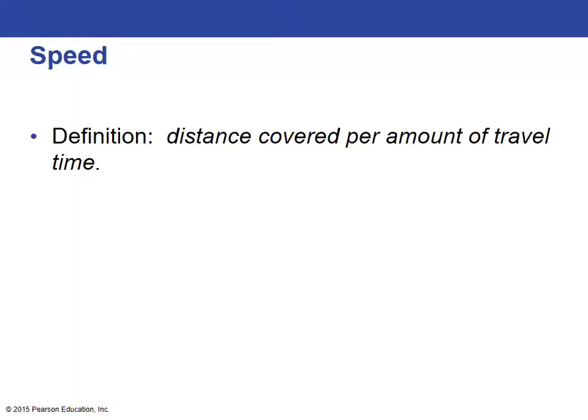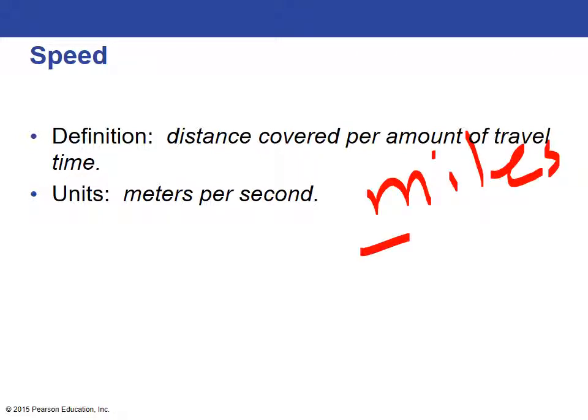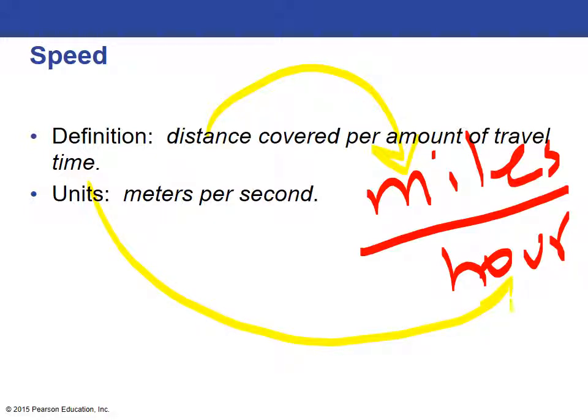When we talk about speed, we are talking about the distance covered per amount of travel time, and our units are going to be meters per second. They don't have to be meters per second. They might be miles per hour, one that you're probably familiar with. You're an expert on speed and velocity because of the cars you've been riding in and driving. But it's always some measure of distance and some measure of time, and we use the word per to indicate that we're dividing.